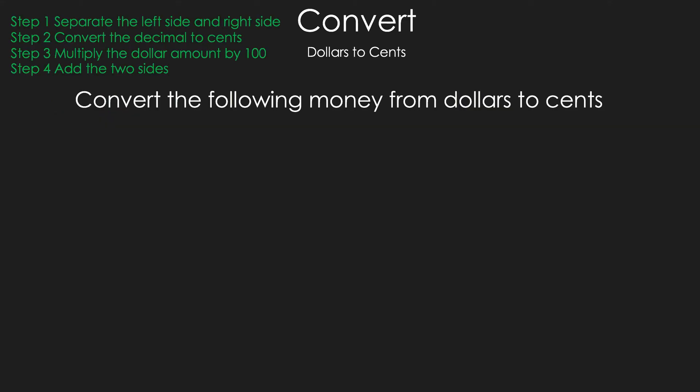In these examples that we are about to do, we're converting dollars to cents. If you follow these four steps, you will be golden. Step 1: Separate the left side and right side. Step 2: Convert the decimal to cents. Step 3: Multiply the dollar amount by 100. And Step 4: Add the two sides.